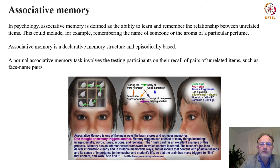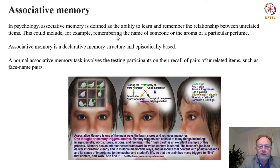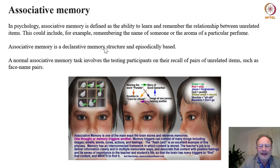Now a few words about associative memory. In psychology, associative memory is defined as the ability to learn and remember the relationship between unrelated items — for example, remembering the name of someone, the aroma of a particular perfume, or any other sensory impression. Associative memory is a declarative memory structure and often episodically based. A typical associative memory task involves testing the recall of pairs of unrelated items such as face–name pairs, making it a very wide term in human psychology.